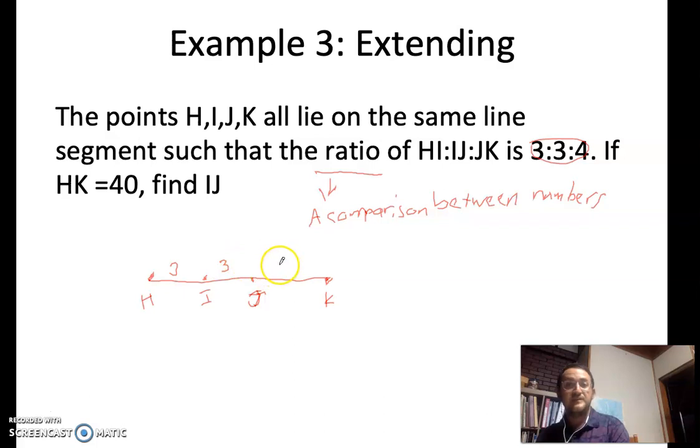It says that HI corresponds with 3, IJ corresponds with 3, and JK corresponds with 4. And it tells us that HK, we're just going to put that in as 40 right now.